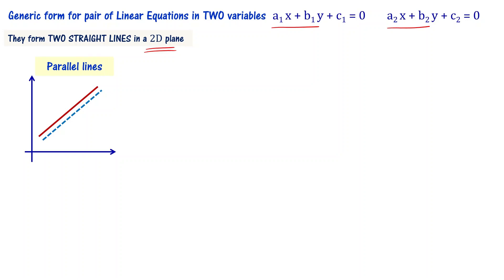Those straight lines can be parallel lines. When you have parallel lines, the equations will have no solution and the equations are said to be inconsistent, and the coefficients relate as a1 by a2 equal to b1 by b2, that is not equal to c1 by c2.